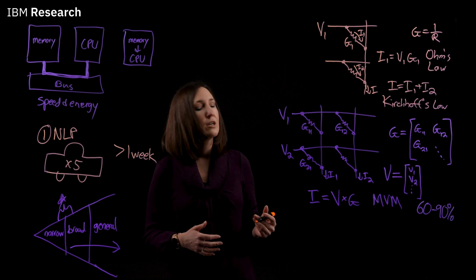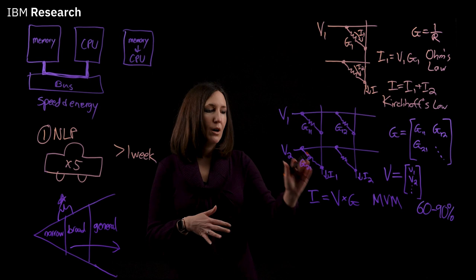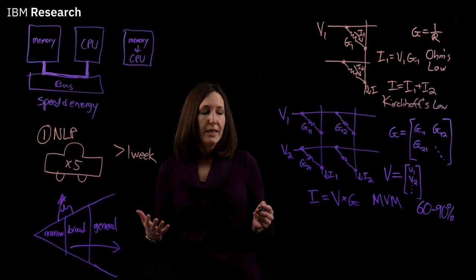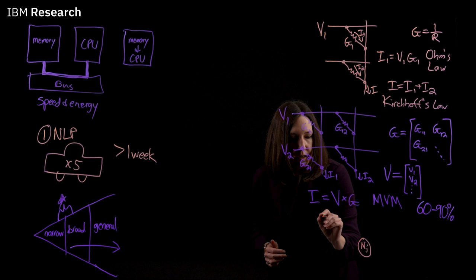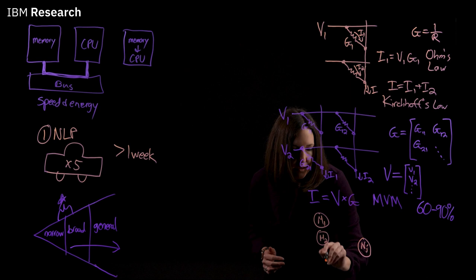How do we actually map our neural network onto our hardware? Well, a layer of a neural network consists of many output neurons. And each of those output neurons, for instance N, it's going to be driven by a set of input neurons through set of weights.